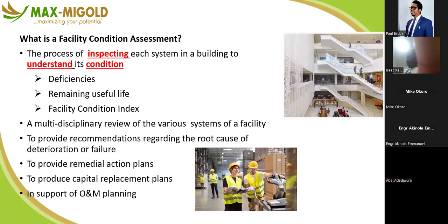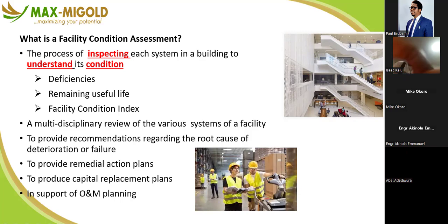What is a facility condition assessment? Pay attention to three key words: inspecting, understand, and condition. Condition assessment is the process of inspecting each system in a building to ascertain — to understand — to know exactly what you are dealing with: the current condition of that particular facility and what deficiencies exist. With the level of defects found during your assessment, you can determine the remaining useful life of that facility.